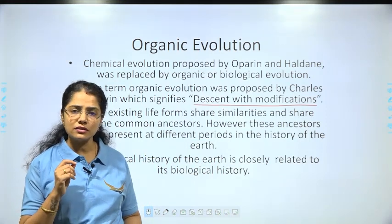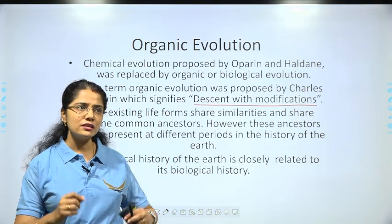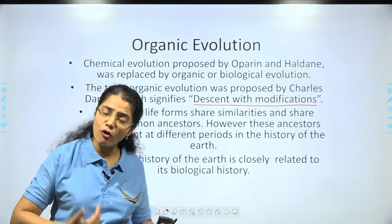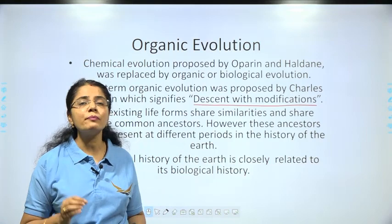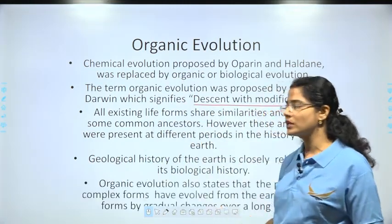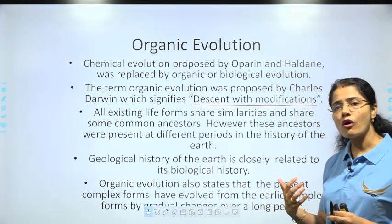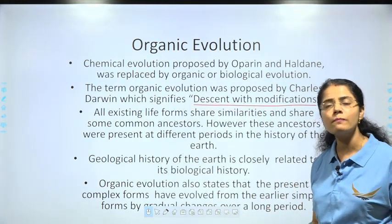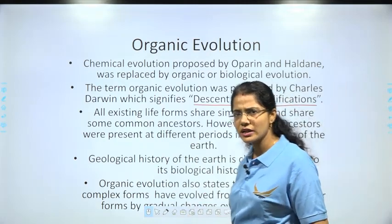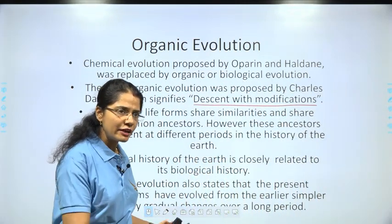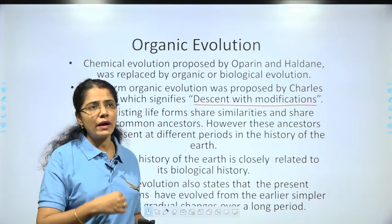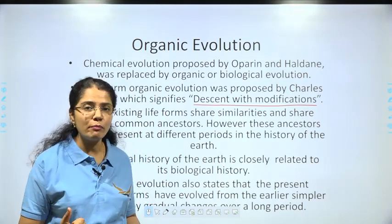Organic evolution states a very simple thing: the complex forms which exist now have not just come up like this. They have evolved from earlier, simpler forms by gradual changes over a long period — slowly and steadily. The complex life forms that exist right now have emerged through those gradual changes. To understand how the earliest life forms slowly evolved into the organisms we see today, we do a comparative study, which helps us understand organic evolution better.